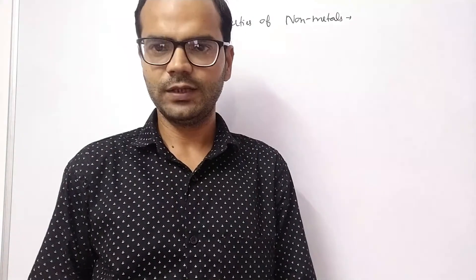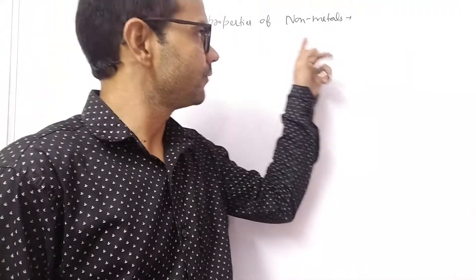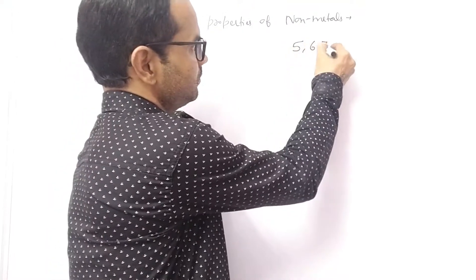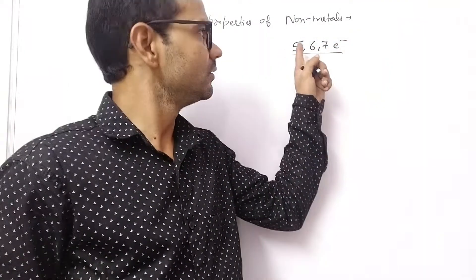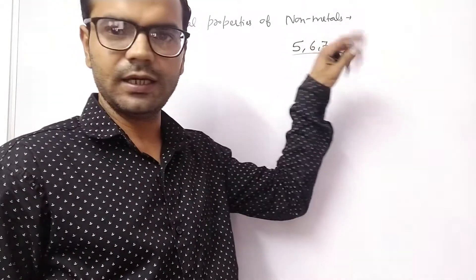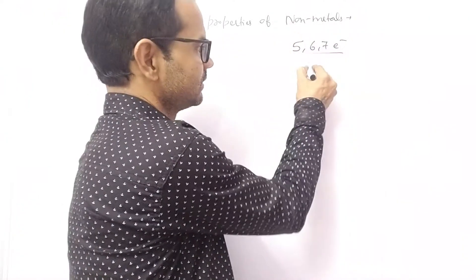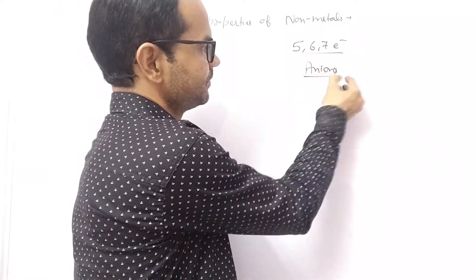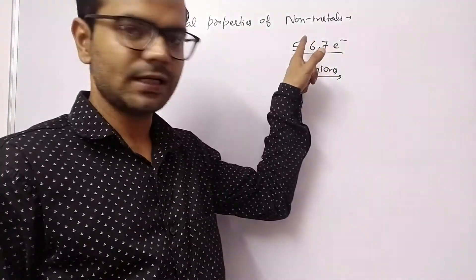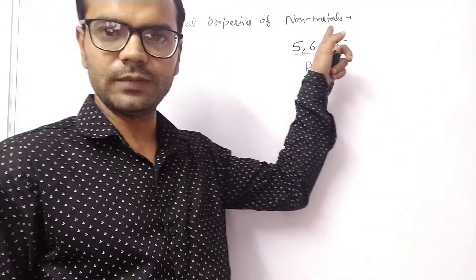Hello everyone and welcome back to my YouTube channel. Today we will discuss chemical properties of non-metals. Non-metals are those elements which have either five, six, or seven electrons in their valence shell, which means they can gain or attract electrons and they form negatively charged ions, called anions. The chemistry of non-metals is slightly different from metals.